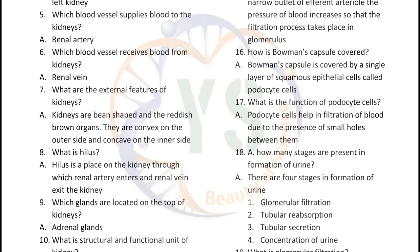Which blood vessel supplies blood to the kidneys? Renal artery. Which blood vessel receives blood from the kidneys? Renal vein. What are the external features of kidneys? Kidneys are bean-shaped and reddish-brown organs. They are convex on the outer side and concave on the inner side. What is hilus? Hilus is a place on the kidney through which the renal artery enters and the renal vein exits the kidney. Which glands are located on the top of kidneys? Adrenal glands.